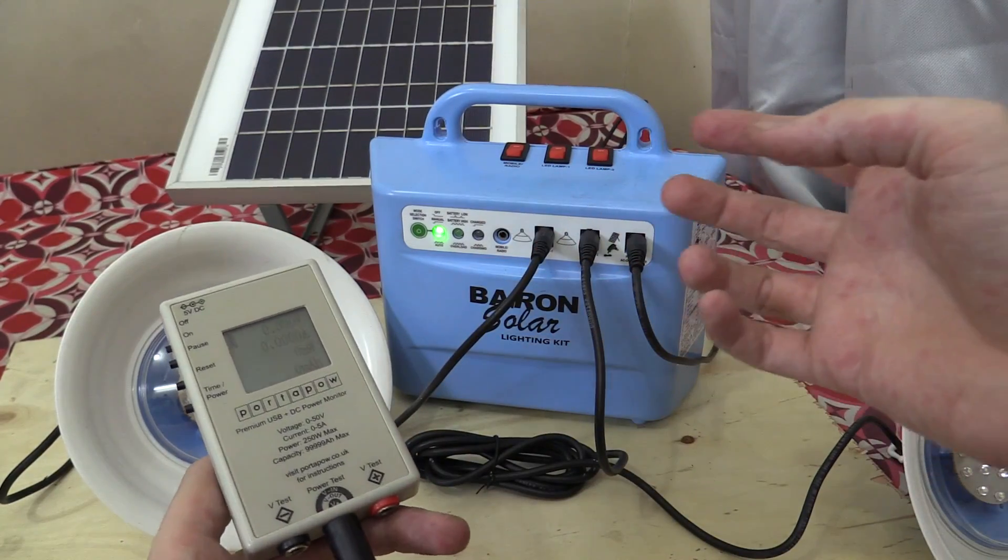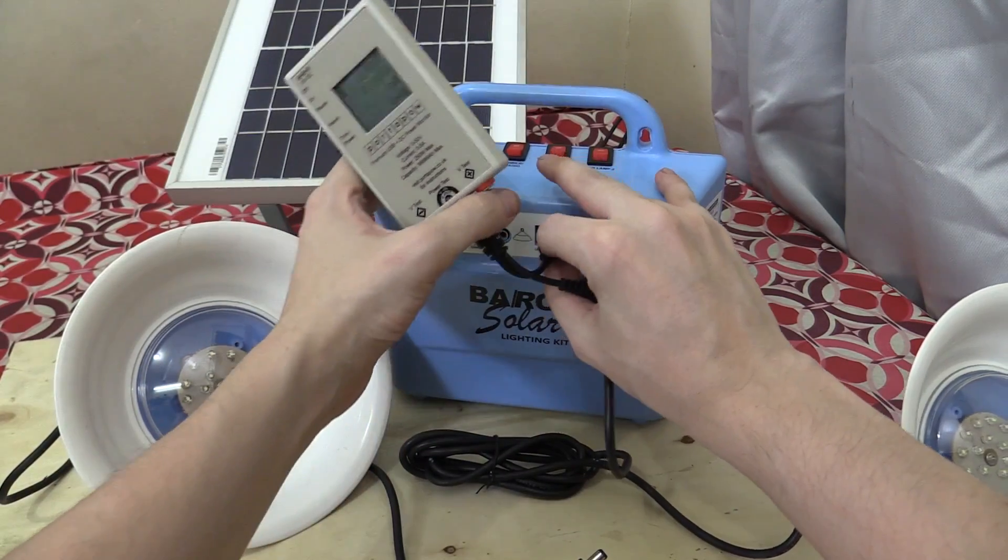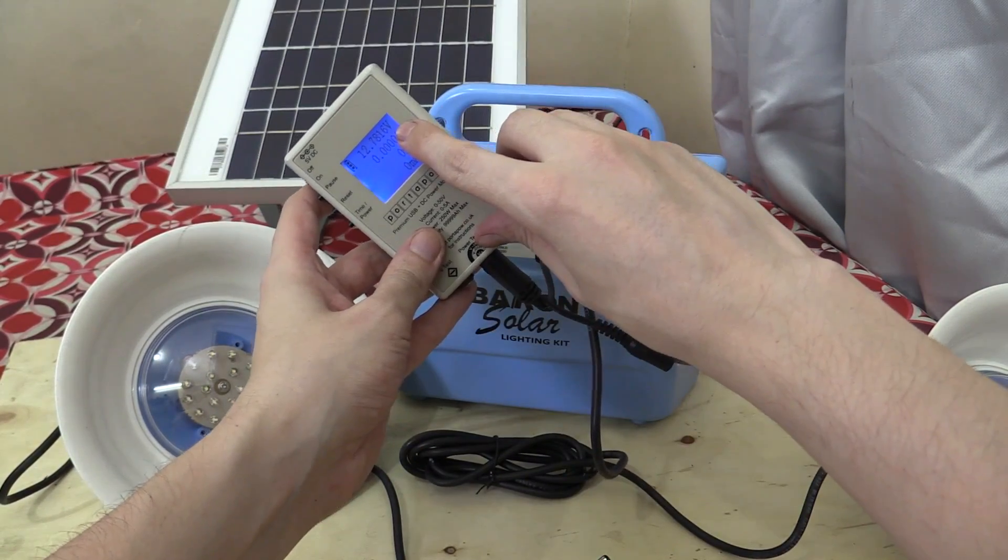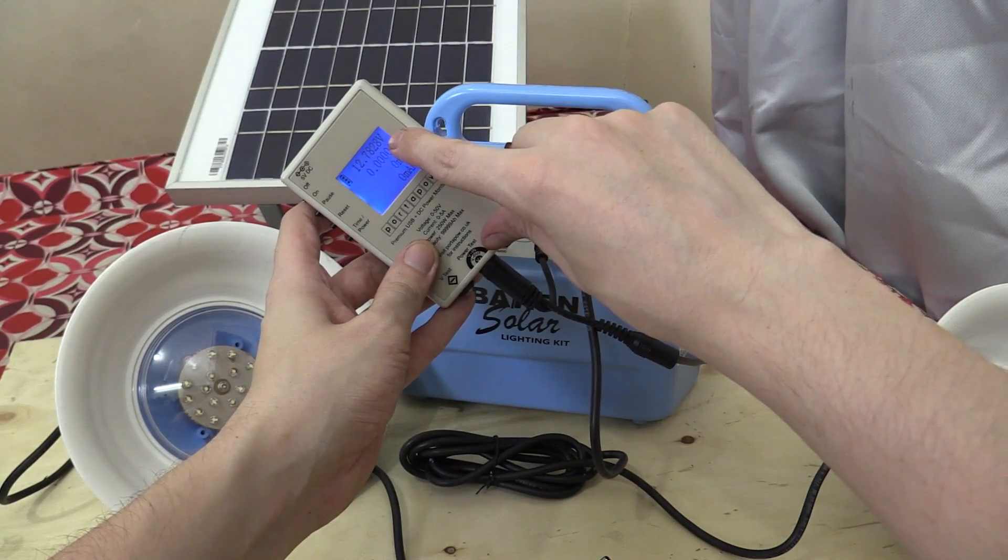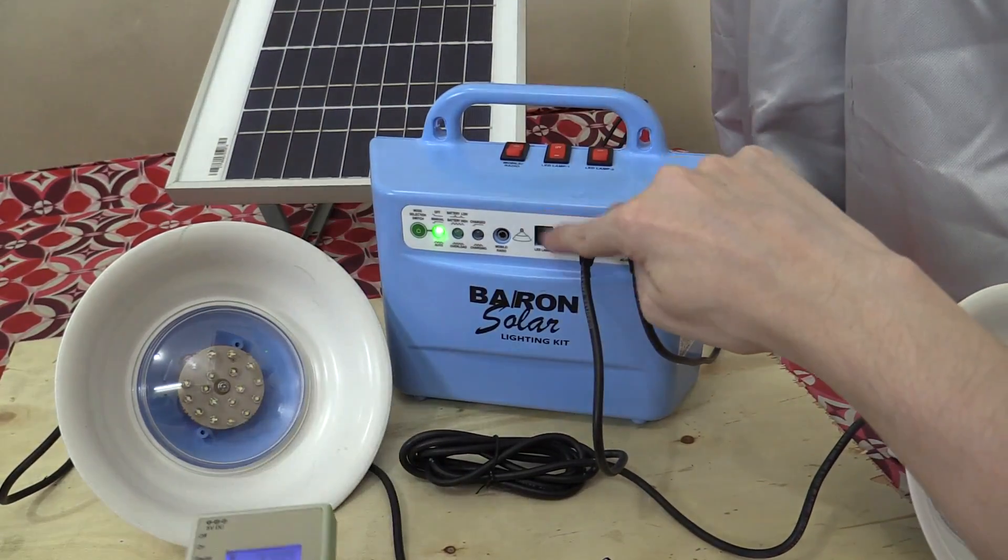So why did I say not all hope is lost? Well, if we unplug one of the lights and then plug in my tester, I'll turn on the switch. And hopefully you can see on camera, that's 12.7 volts. We're getting quite a workable voltage from this socket.